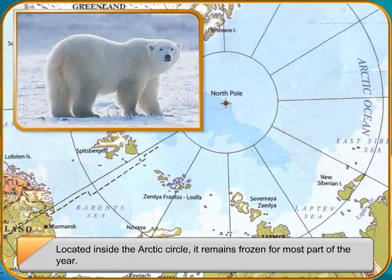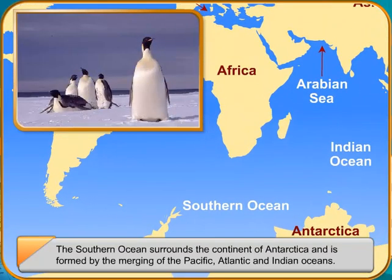The Southern Ocean surrounds the continent of Antarctica and is formed by the merging of the Pacific, Atlantic, and Indian oceans.